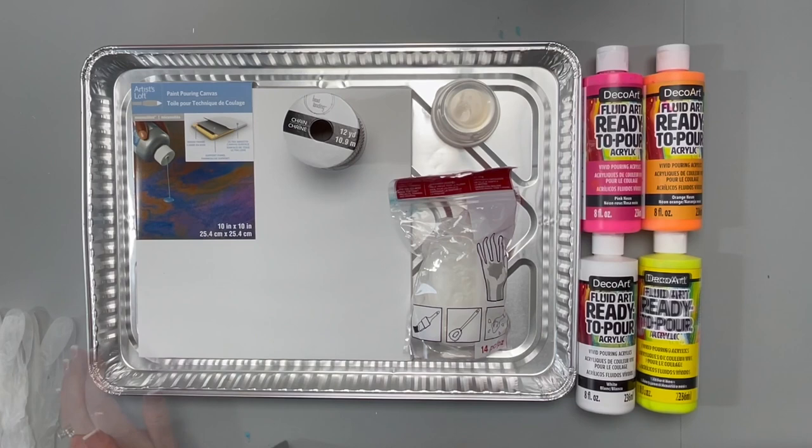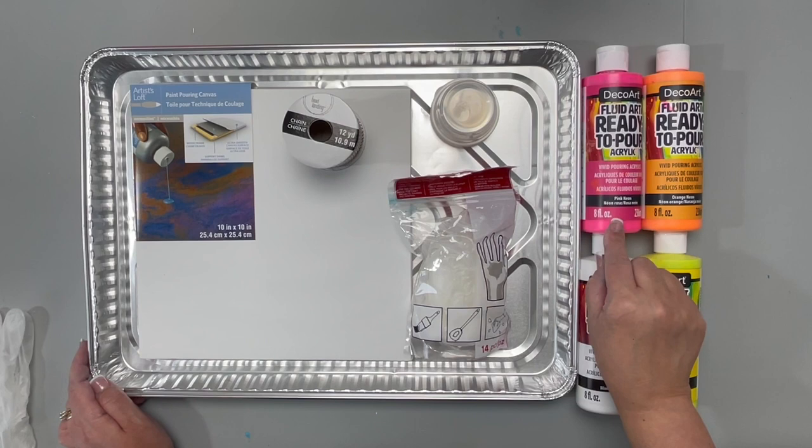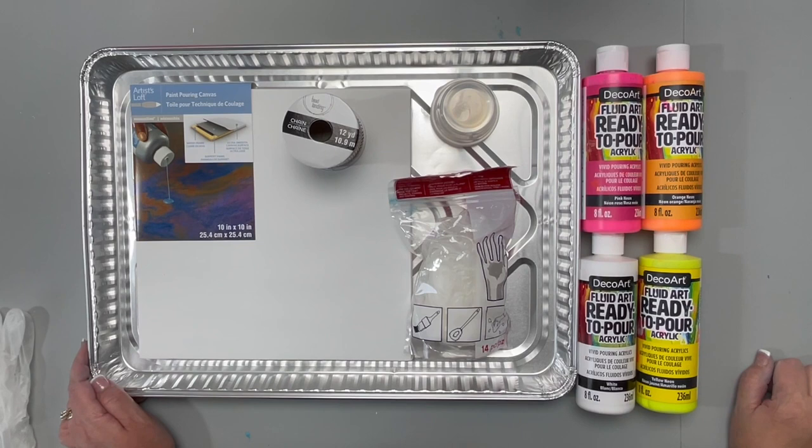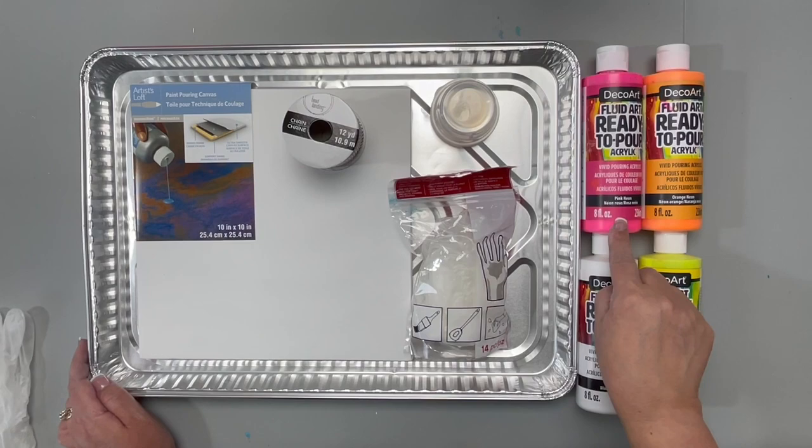And then our paints. You'll want to make sure to pick these up at Michaels. The DecoArt Fluid Art ready to pour acrylics. These acrylics are perfect for your paint pouring projects. I'm using these bold fluorescent beautiful neon colors in pink, orange, yellow, and white.